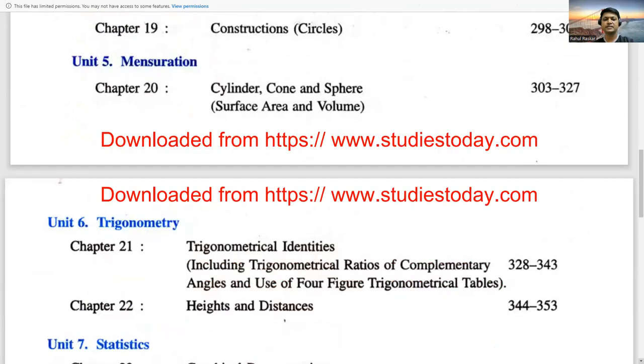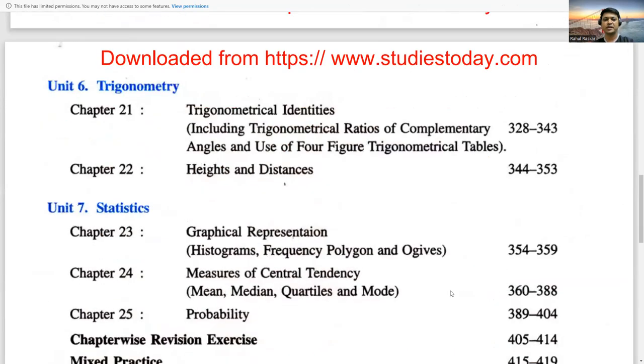Unit 6 is related to Trigonometric Geometry. In that we will see Trigonometric Identities which includes different ratios of trigonometry, of complementary angles, and use of four figure trigonometric tables. Then Heights and Distances, that is the application of trigonometry.